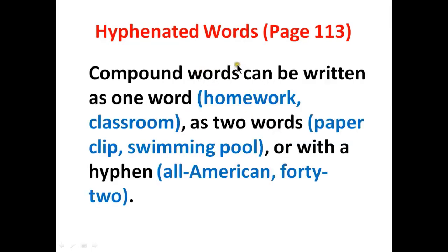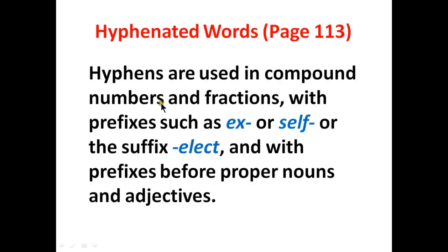Now we are going to do another exercise on page number 113, about hyphenated words. Compound words can be written as one word like 'homework' or 'classroom' — a combination of two different nouns that collectively make one compound noun. They can also be written with a space like 'paper clip' or 'swimming pool,' or with a hyphen like 'all-American.' A hyphen is a punctuation mark used between two words to make a hyphenated word. Hyphens are used in compound numbers and fractions, with prefixes such as 'ex-' or 'self-,' the suffix '-elect,' and with prefixes before proper nouns and adjectives.